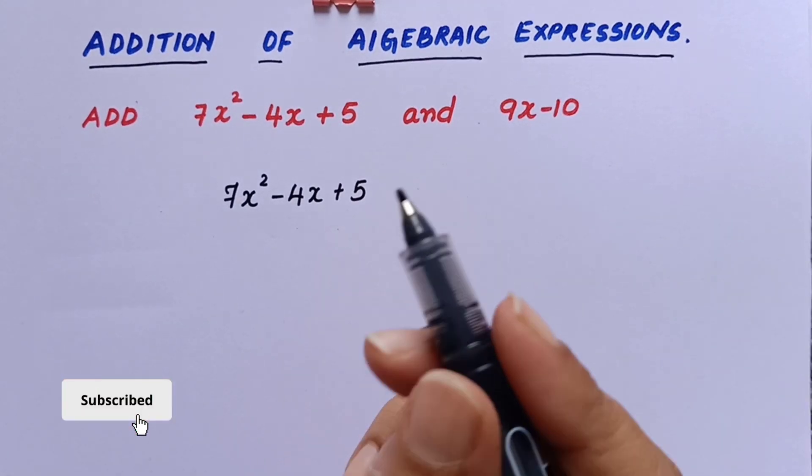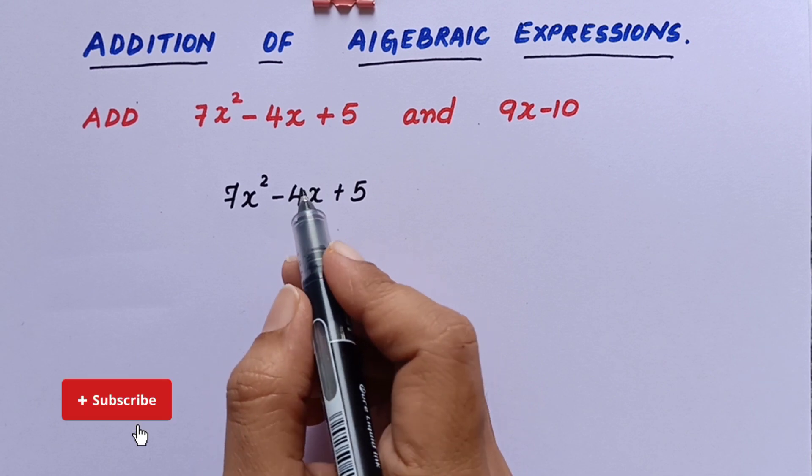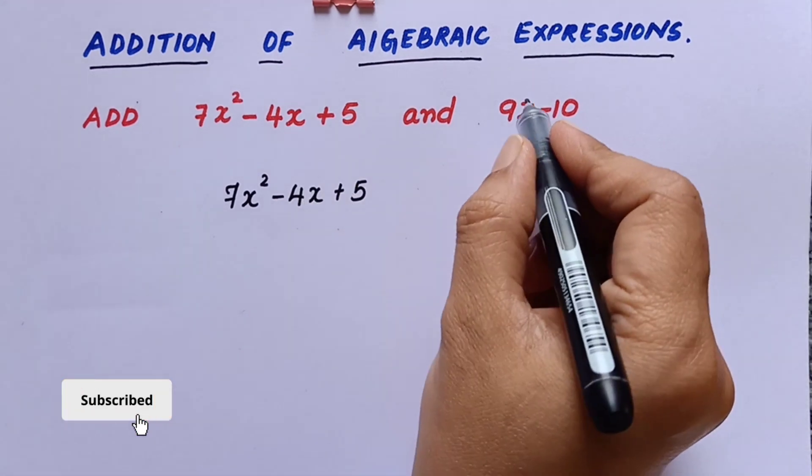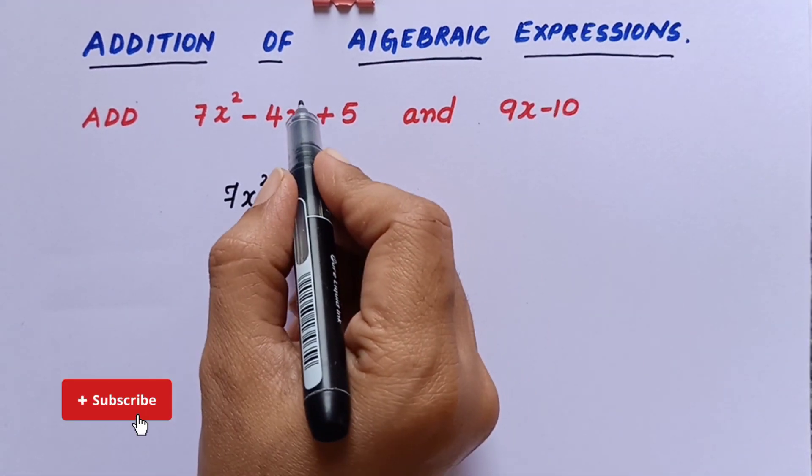So how do we need to write this expression is, we'll have to write the like terms one below the other. Okay.